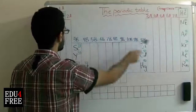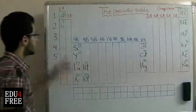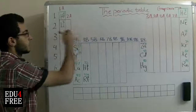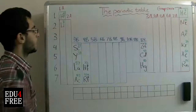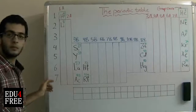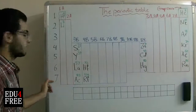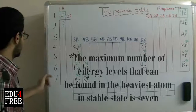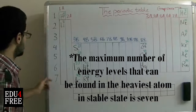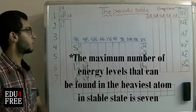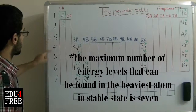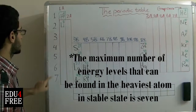We have horizontal lines and vertical lines. The horizontal lines are called periods, and there are seven of them — the same number as the main energy levels in the atom, or the same number as the principal quantum number inside an atom: one, two, three, four, five, six, and seven.